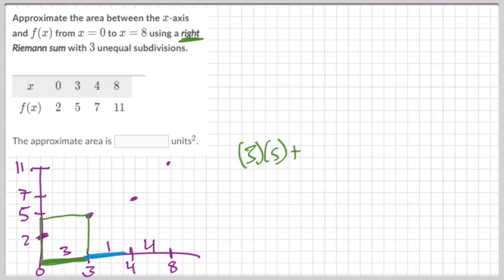So that would be 3 times 5 plus. Then the next one, our next subdivision is only length 1. And what is the height of our next rectangle, table 2? It's not 6. Table 1, what is the height of our rectangle? It is 7. We go to the right side, and then we get our rectangle.